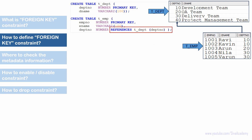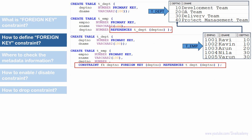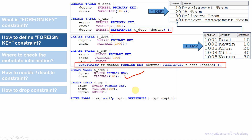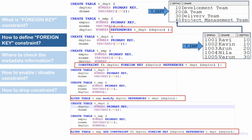To recap the four methods: Method 1 uses the REFERENCES keyword directly in the CREATE TABLE statement. Method 2 also uses CREATE TABLE but adds the CONSTRAINT keyword with a user-defined name. Methods 1 and 2 are essentially the same — the only difference is that Method 2 assigns a user-defined constraint name. Method 3 creates both tables first, then uses ALTER TABLE to add the constraint without a custom name, so Oracle assigns a system-defined name. Method 4 is similar to Method 3 but uses ALTER TABLE with the CONSTRAINT keyword to provide a user-defined constraint name.